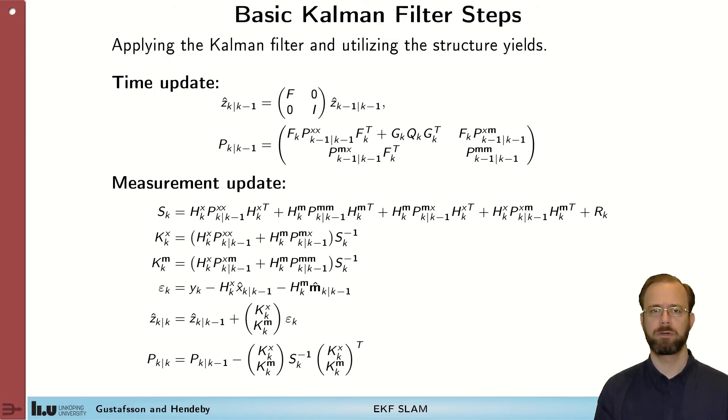With this model we are now able to formulate the EKF SLAM on the covariance form. We simply apply the Kalman filter to the model that we have seen. This turns out to be an EKF if we have performed linearizations to obtain the linear model previously defined.